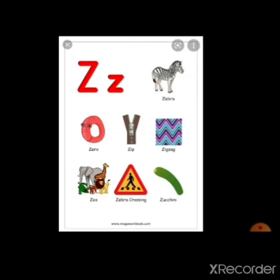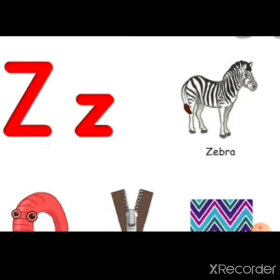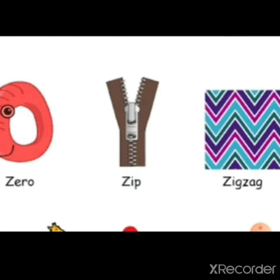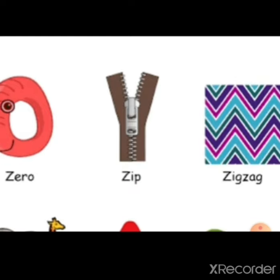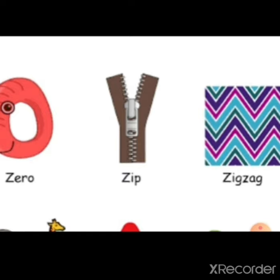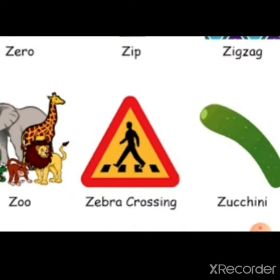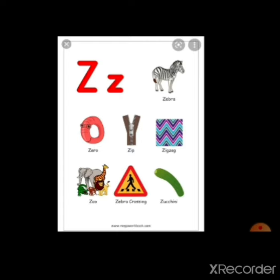Next capital letter is Z. Z for zebra. Z for zero. Z for zip. Z for zigzag. Z for zoo. Z for zebra crossing. Z sounds zz.